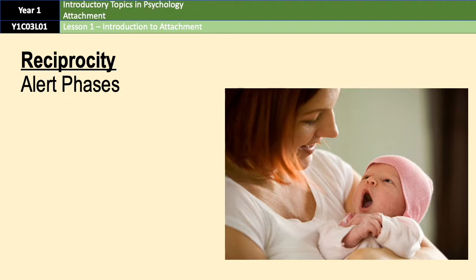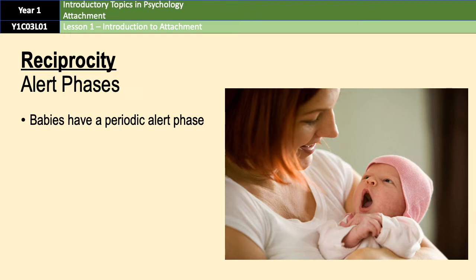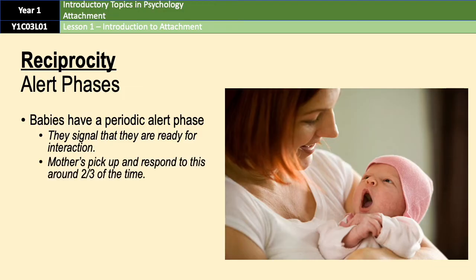Research into reciprocity has shown that babies have a periodic alert phase in which they signal that they're ready for interaction — for example by making eye contact or a sound. According to Feldman and Eidelman in 2007, mothers typically pick up and respond to their baby's alertness around two-thirds of the time. However, their research also noted that mothers' ability to respond is influenced by external factors such as parenting skill and stress.